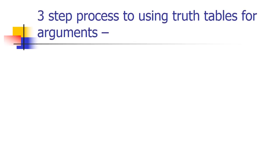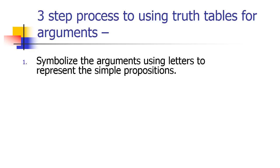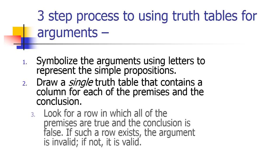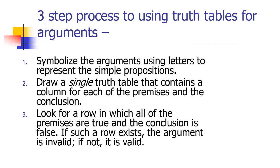It's basically a three-step process. Number one, symbolize your arguments consistently using simple capital letters to represent simple propositions. Then draw a single truth table containing a column for each of the premises and the conclusion. Once you've done that, look left to right along the rows to see if you can find a row where all the premises are true and the conclusion false. If there is such a row, the argument's invalid. If not, it's a valid argument.